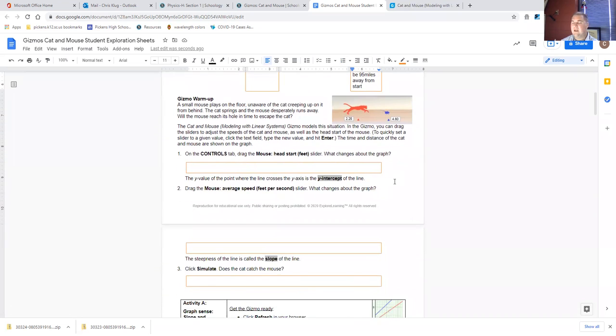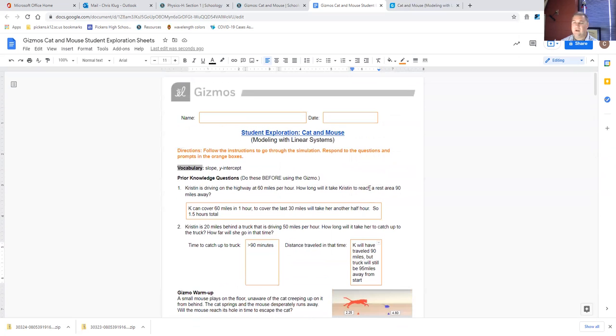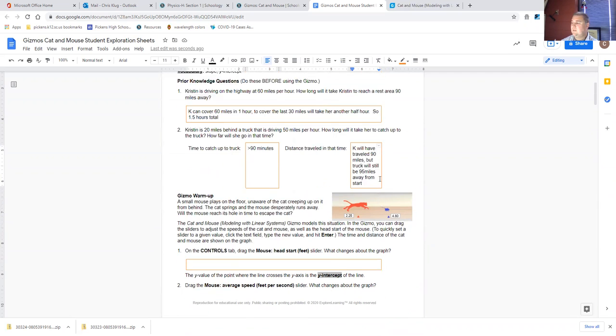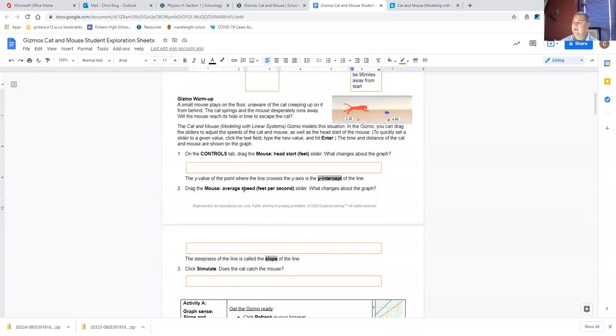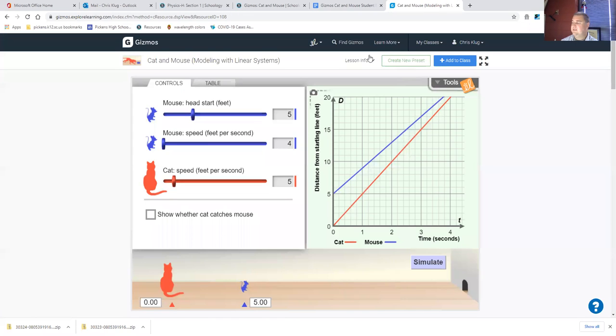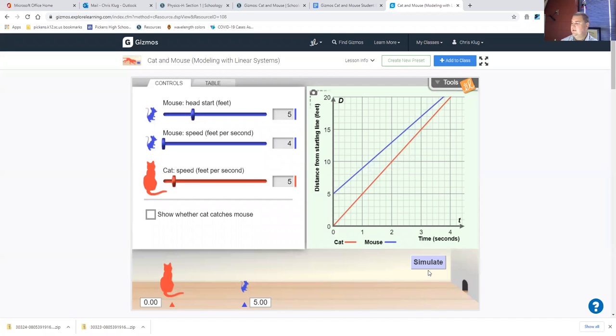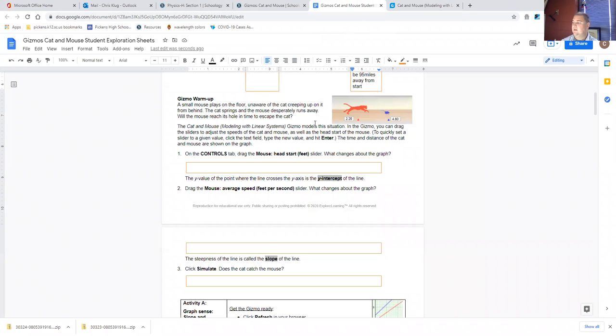This is a little bit more of a math kind of exercise, but because we're going to be doing a lot of linear equations in physical science overall, I think this is a good exercise for you guys to work through. Then we have the gizmo warmup. So you want to make sure that you have the gizmo open in a different tab. A small mouse plays on the floor, unaware of the cat creeping up on it from behind. The cat springs and the mouse desperately runs away. You could simulate that here and see, does the cat ever catch the mouse?